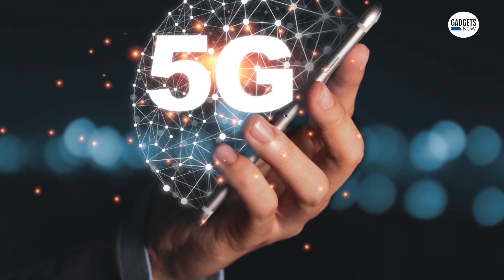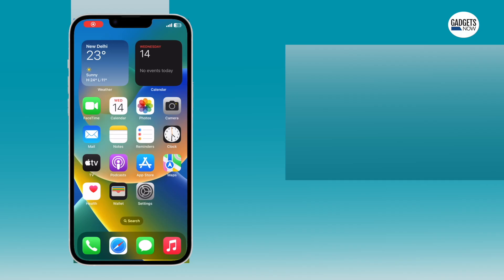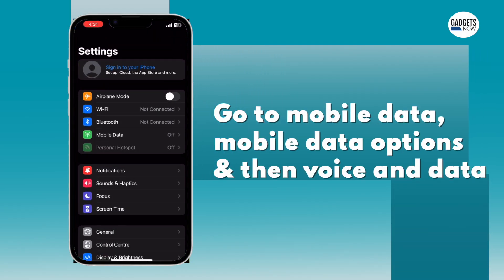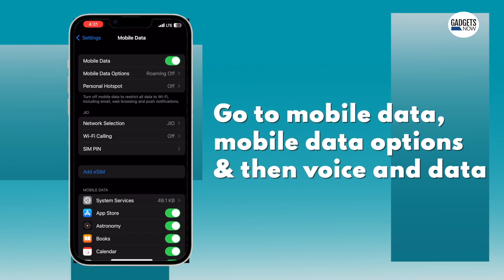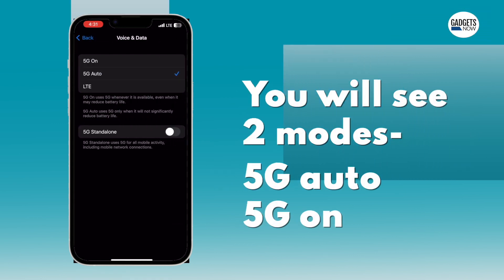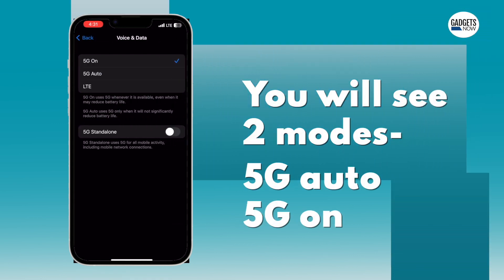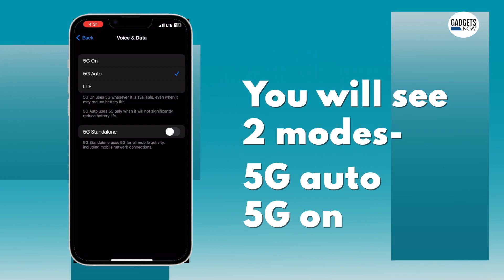Once you have updated the software to iOS 16.2, all you have to do is activate 5G services on your iPhone. Head to Settings, then Mobile Data, then Mobile Data Options, and then Voice and Data. Here you will find two 5G modes: 5G On and 5G Auto. You can choose either of them to enable 5G on your iPhone.